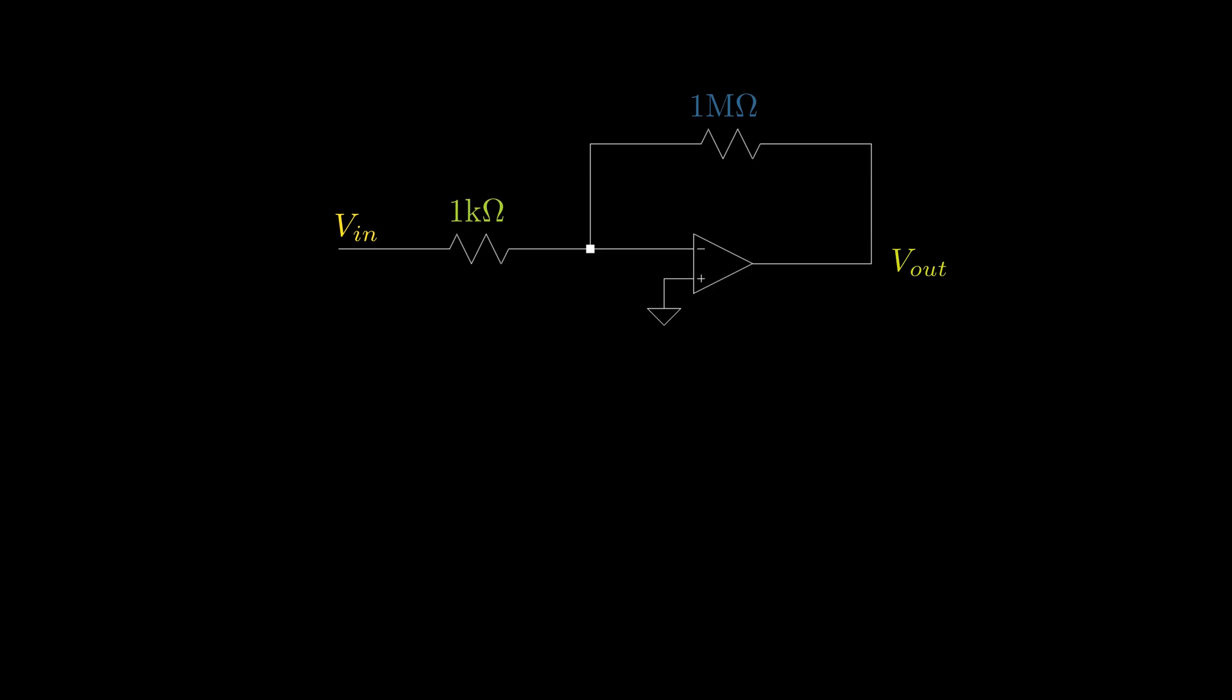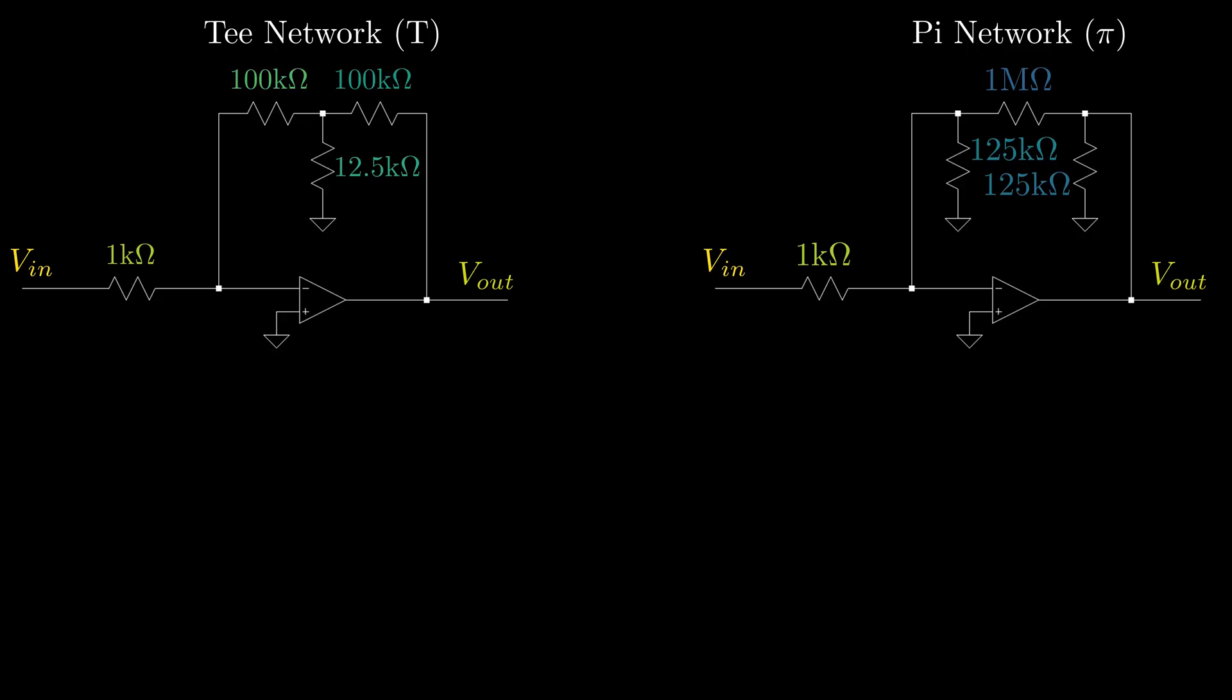Why did we do this? If you look at our original circuit, we have a single 1 kilo ohm resistor, a single 12.5 kilo ohm resistor, and two 100 kilo ohm resistors. Yet from those resistor values, we achieved an input impedance of 1 kilo ohm and a gain of 1000.